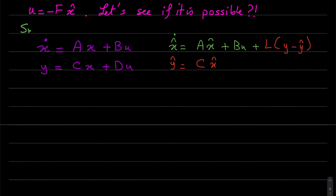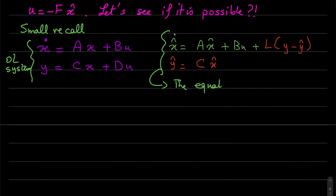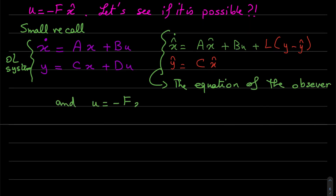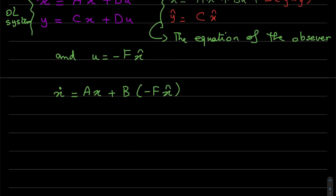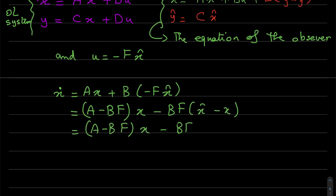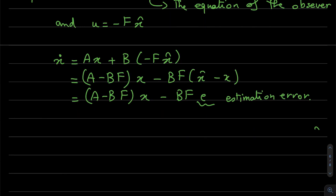We have the system in open loop and the equation of the observer, which is given in previous videos. With u equals minus Fx, I will inject F*x_hat into the system and we will get an equation depending on x and e, where e is the estimation error for the observer.